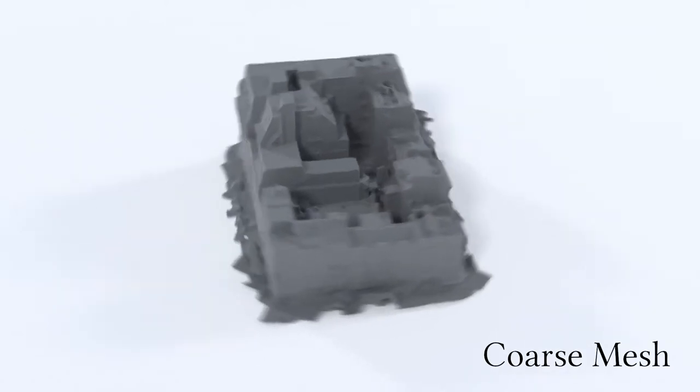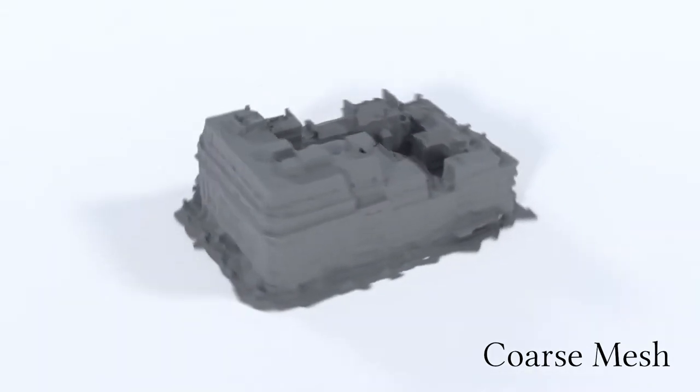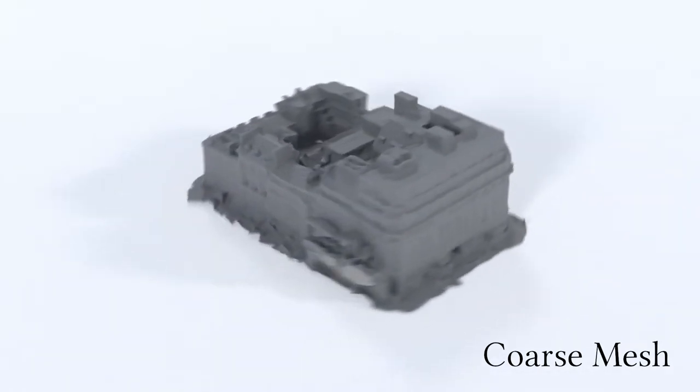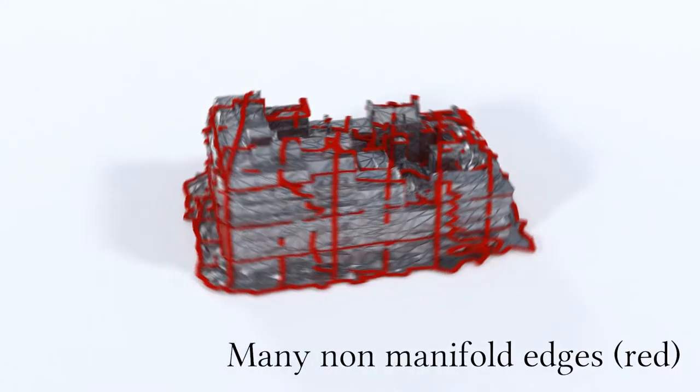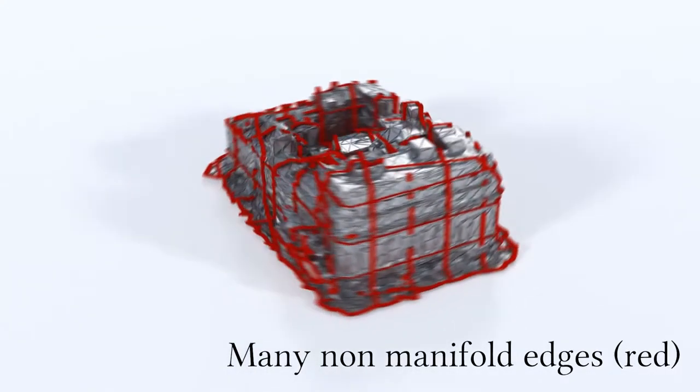Our system takes three inputs. The first is a coarse mesh. Such meshes contain noise and are often incomplete. Acquisition artifacts may lead to many non-manifold edges.